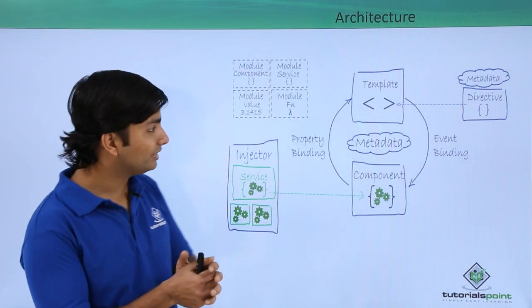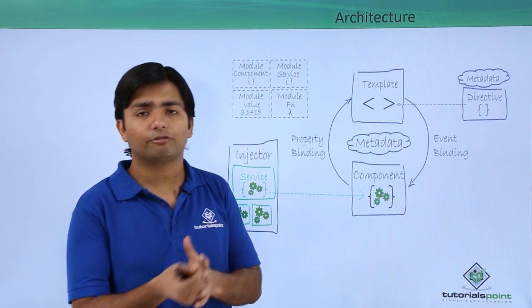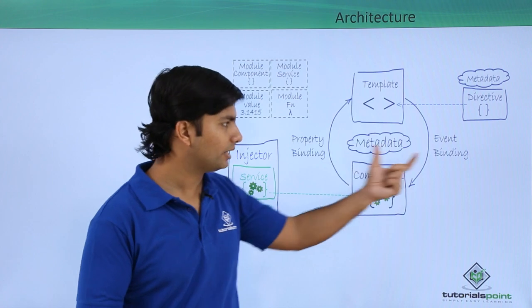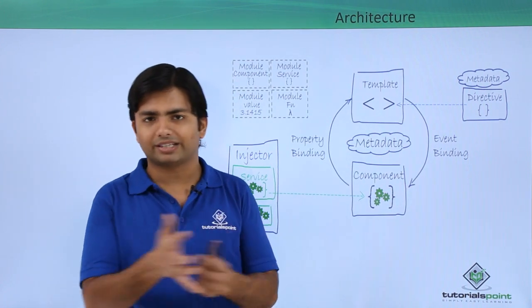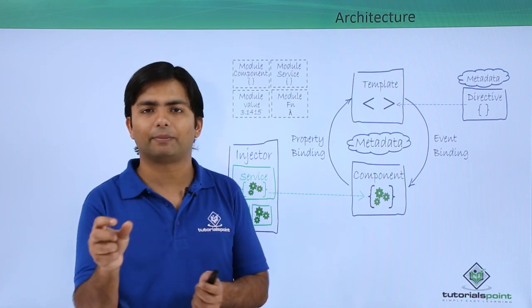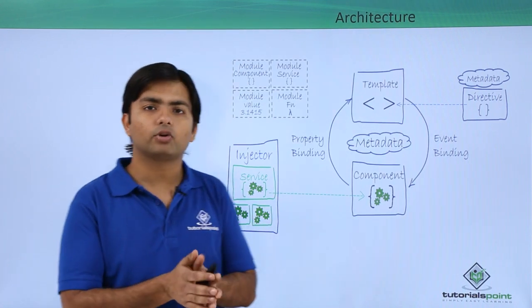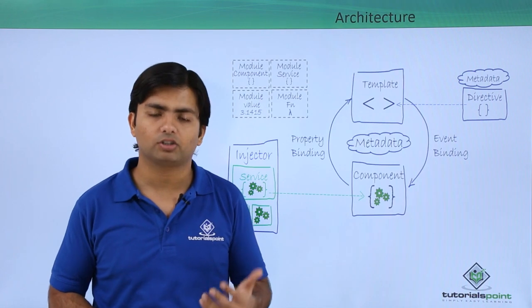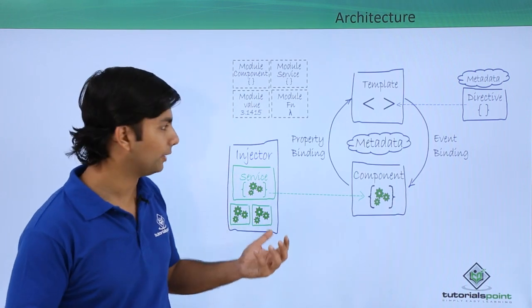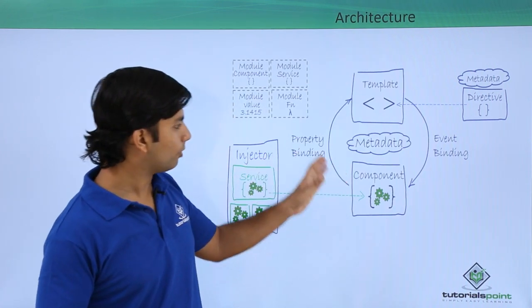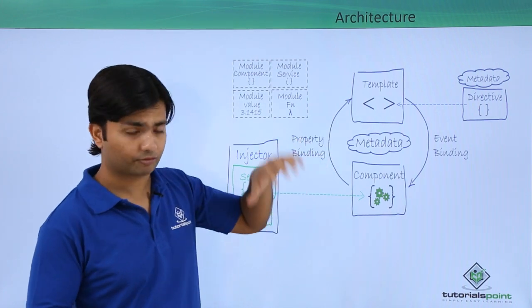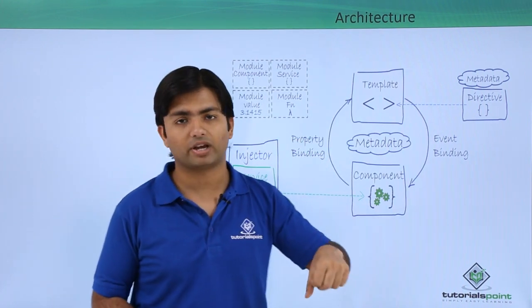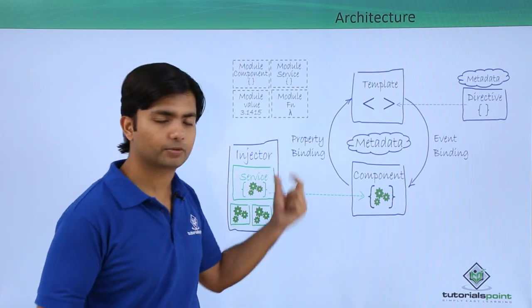Apart from all these things, we will see a lot of bindings like property binding and event binding. Property binding is something like when we pass an HTML tag, we pass some attributes. Each attribute has their own DOM properties, which we can bind for the run time. When your components will be rendered, they will undergo a property binding so that if at run time you want to put any particular value, you will go for this property binding.